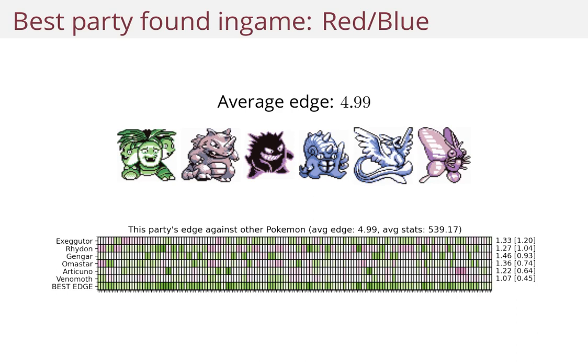To the right of the table below, you see the score of each individual Pokemon. And in the square brackets, you see the Shapley value of each Pokemon in the party.